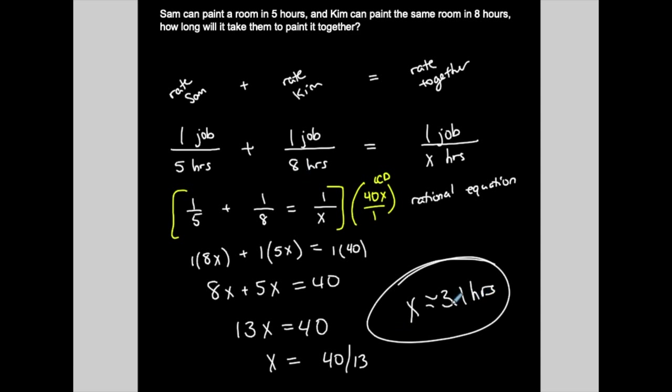And you're expecting, I mean, you are expecting a number less than these two because technically, now they're working together, so it should go faster than both of them working alone. That makes sense, right? 3.1 hours for them to do the job together.